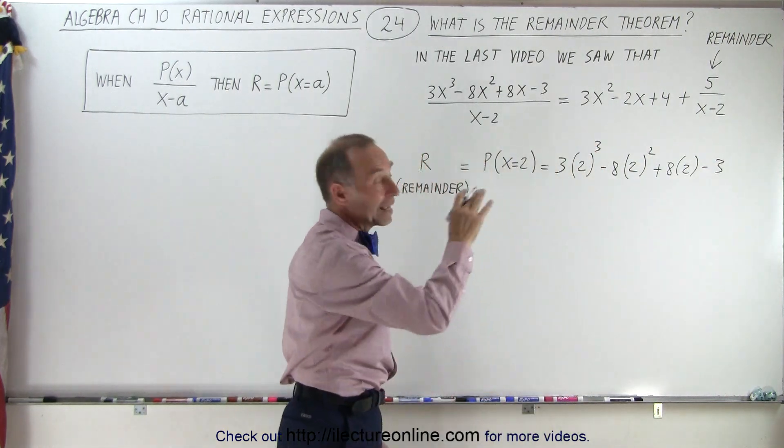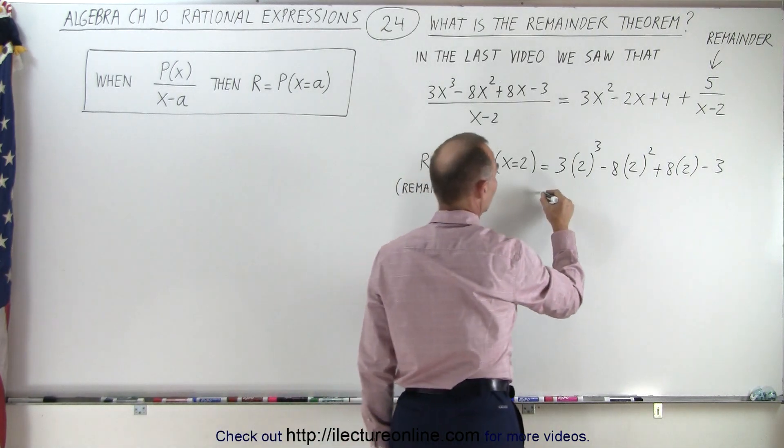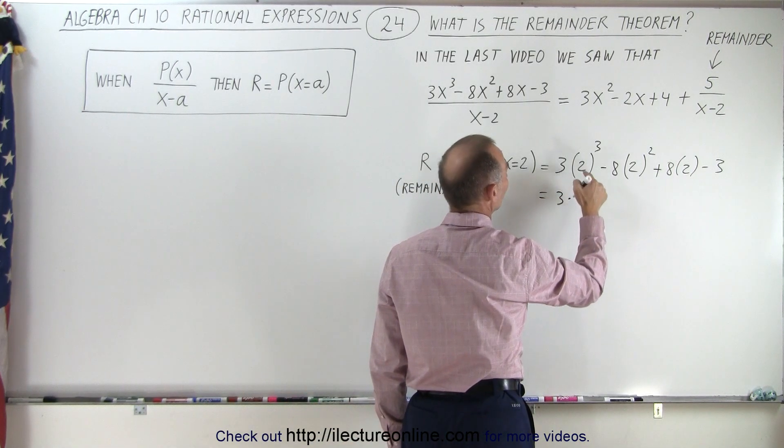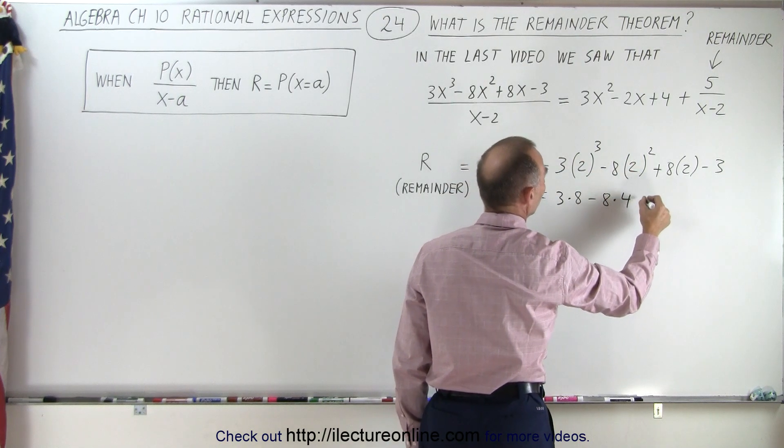Of course, we know that our remainder is 5. Let's see if that does indeed equal 5. So this would be equal to 3 times 2 cubed, which is 8, minus 8 times 2 squared, which is 4, plus 8 times 2 minus 3.